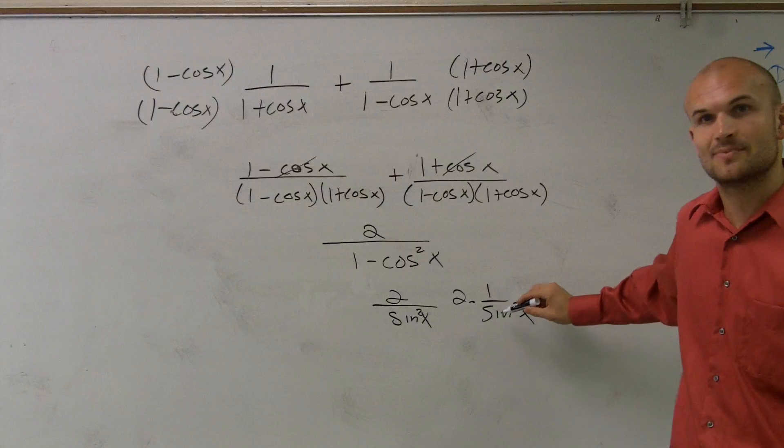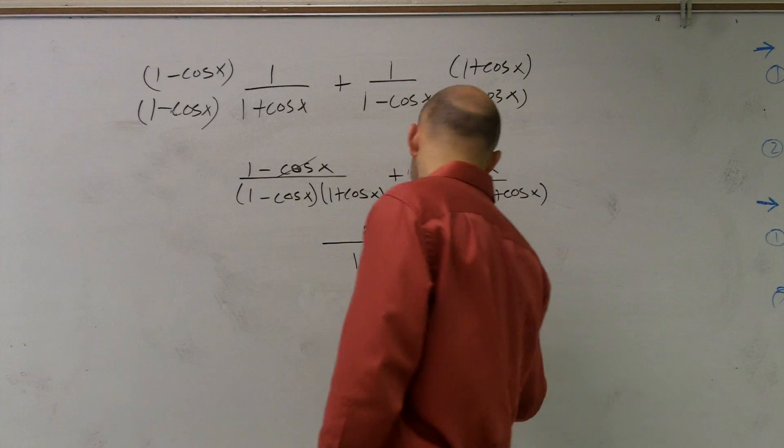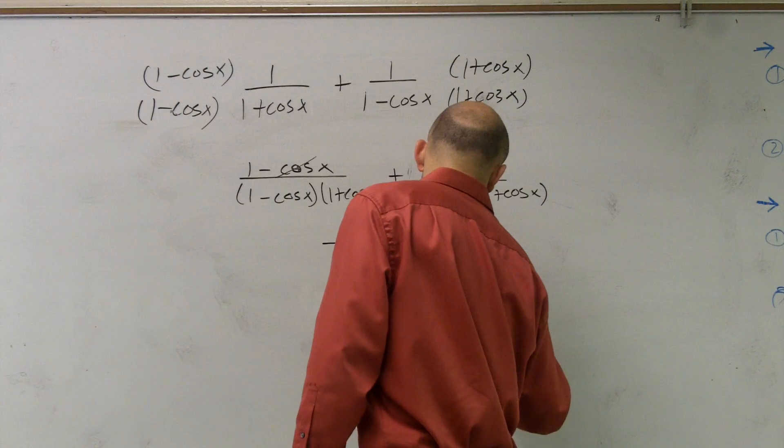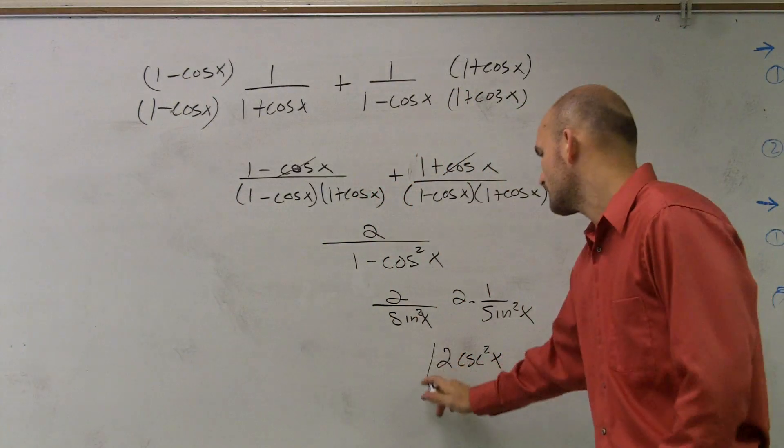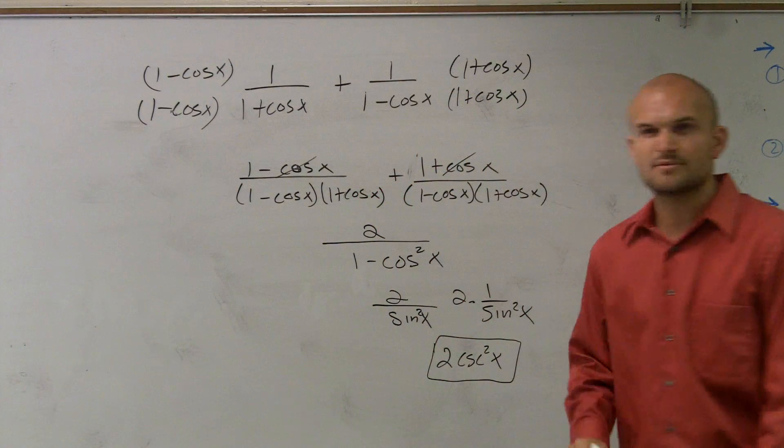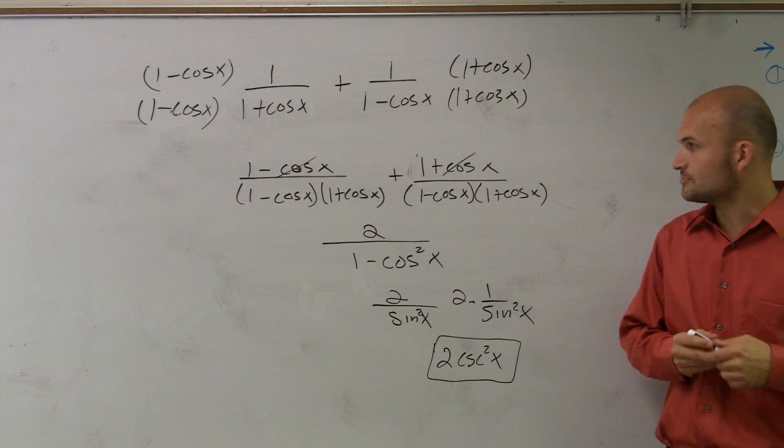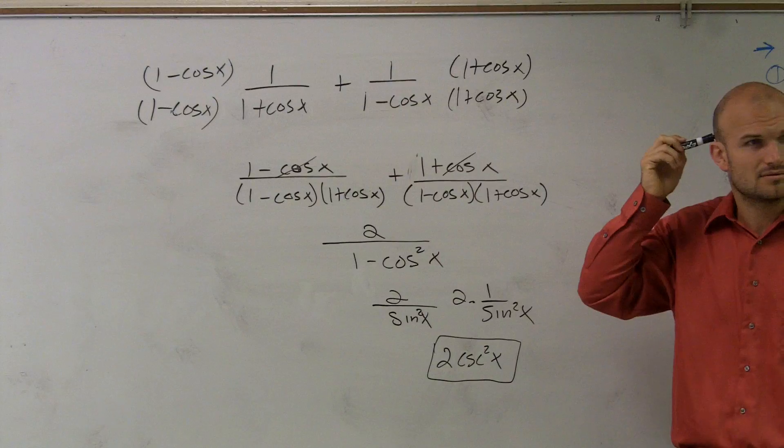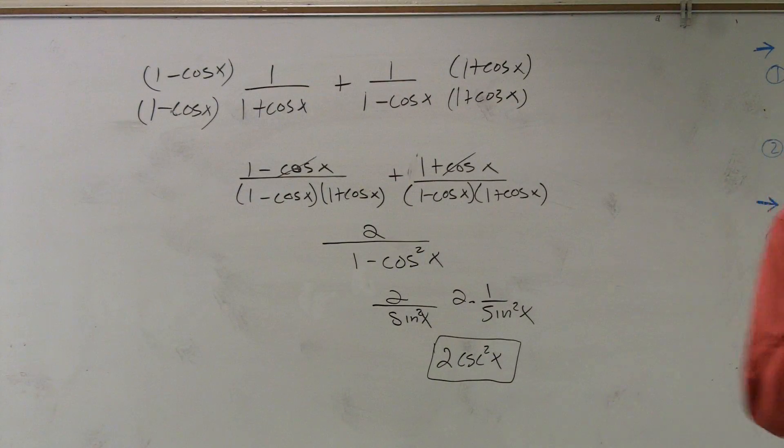1 over sine squared of x is the same thing as cosecant squared, right? Well, I jumped that step. I didn't write 2 times 1, but I just went straight to cosecant squared. I'm just kind of showing as much work as possible so the students can follow. But does everybody see what I did?